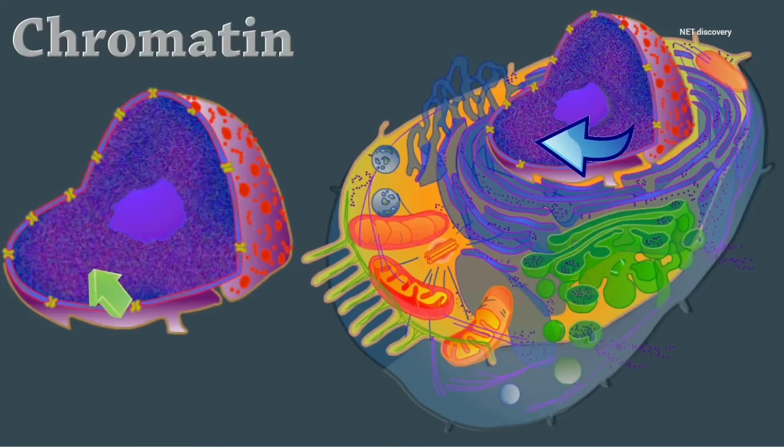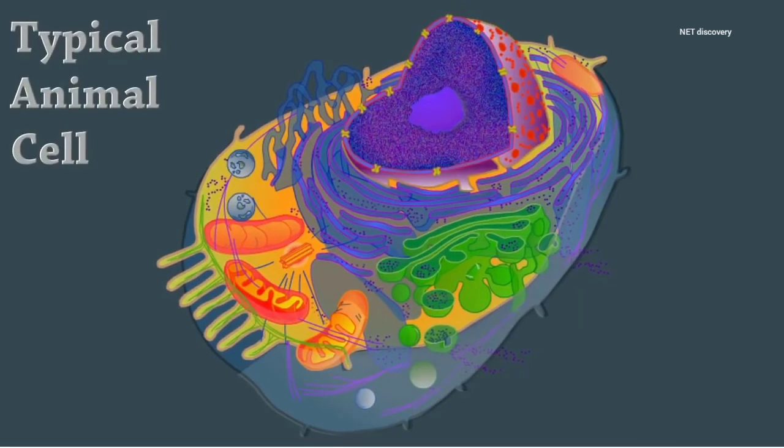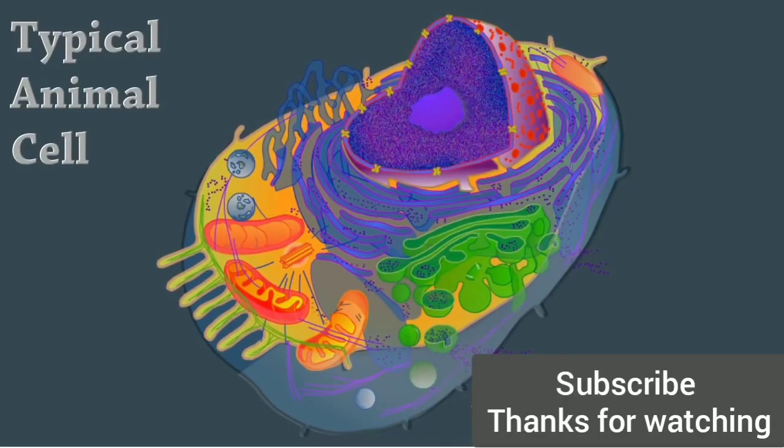Histones, part of the chromatin, compacts the DNA for transport. Today, we've reviewed the parts of the animal cell and the function of organelles. You've completed a typical animal cell. Thank you.